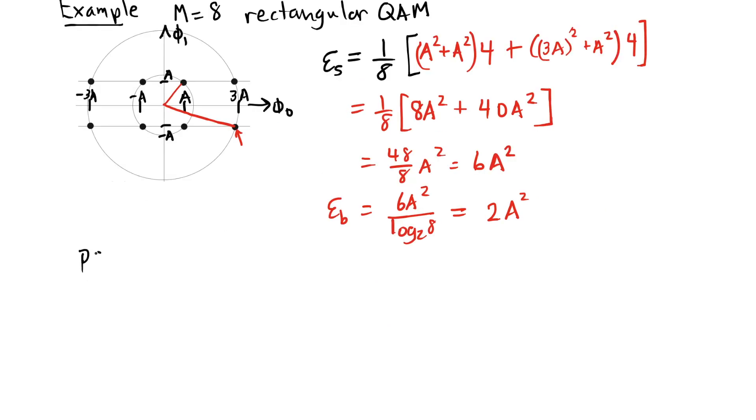For phase shift keying, all of my symbol points have the same energy. Let's call that symbol energy a squared.